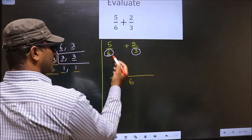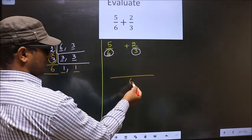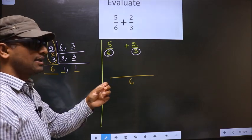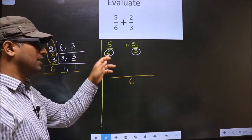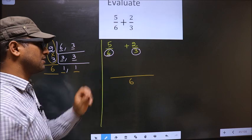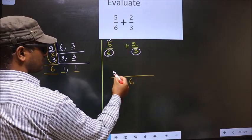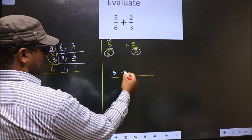Now here the denominator is 6. Here also we have 6. These 2 numbers are same. So I don't need to multiply any number to this. So you will write the numerator as it is. Plus symbol as it is.